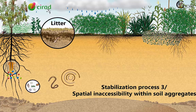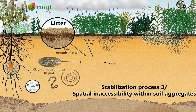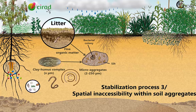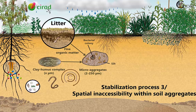and plant roots. Silt particles and fine organic matter stick together with clay-humus complex, encapsulating bacterial colonies. This primary form of soil aggregation is called microaggregation.